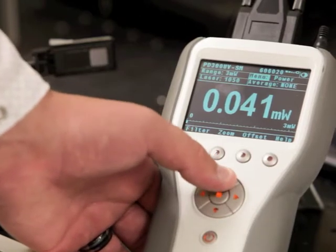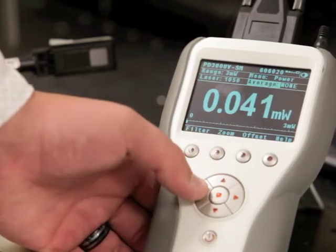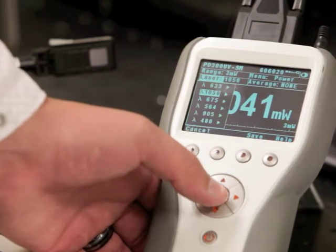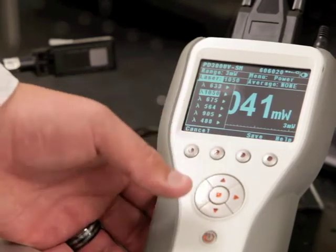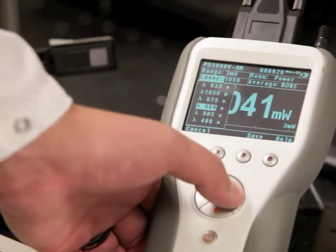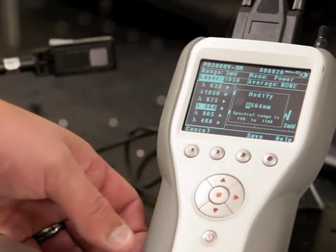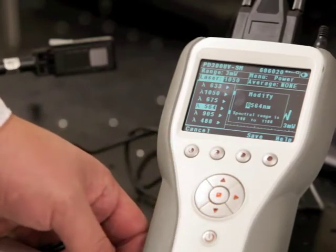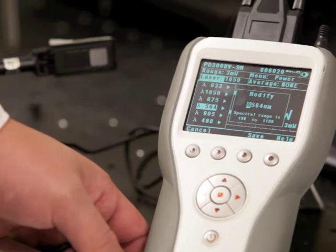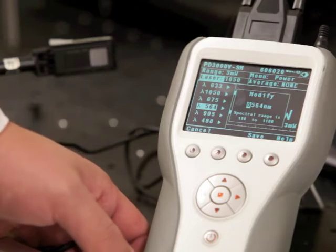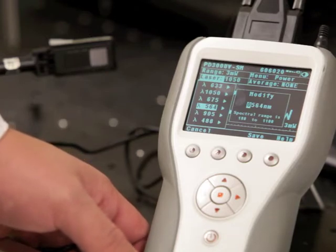Now, if I want to enter a custom wavelength, I go back into the laser function key and from those six favorites, any of the six, you press the right arrow key and it brings up this modify screen. From the modify, you can enter any custom wavelength from 350 to 1100 nanometers.